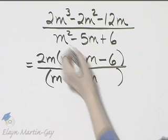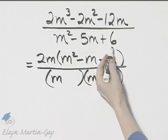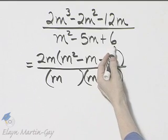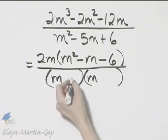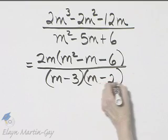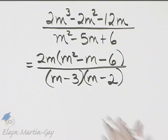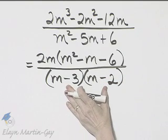m times m gives m squared. What are two factors of positive 6 whose sum is negative 5? That would be negative 3 and negative 2. Double check by multiplying these two binomials.